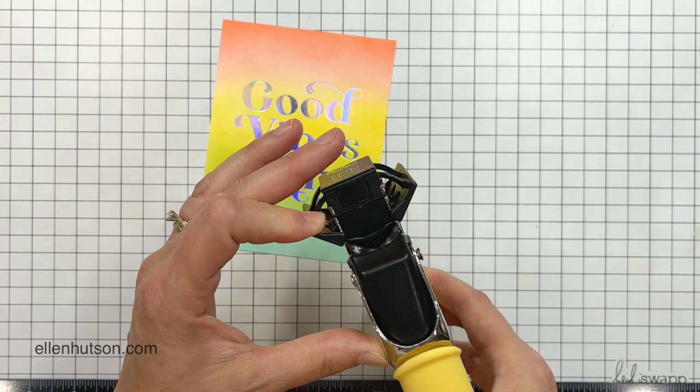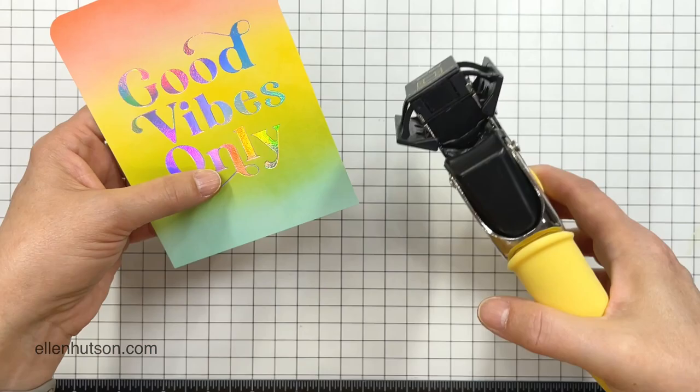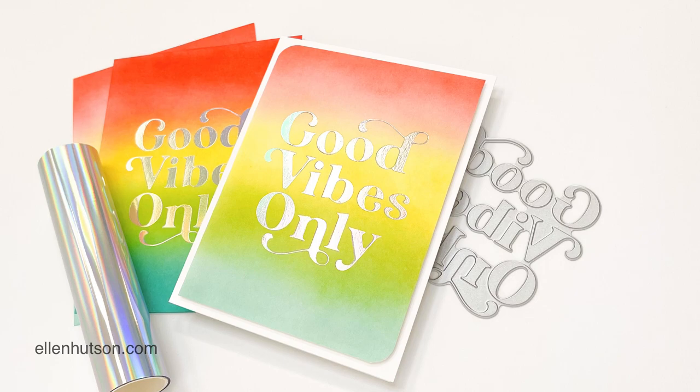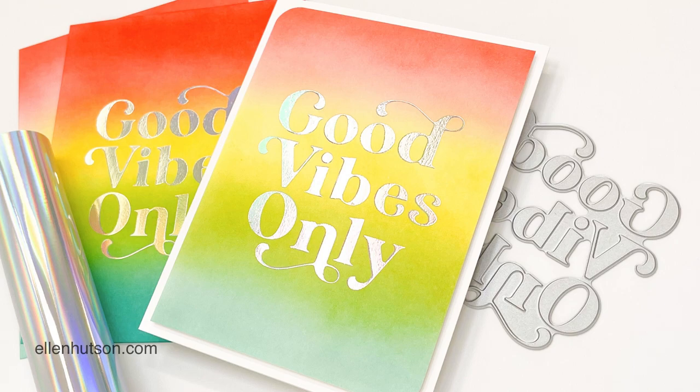Then I trimmed my panel down. Once I got to this point, I decided I wanted to give it a little bit of a retro vibe. So I took my corner rounder—this is the We R Memory Keepers Corner Chomper—and I just rounded those two opposing corners.